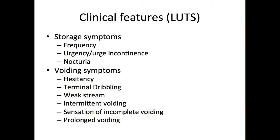There can also be a sense of incomplete voiding and prolonged voiding. The International Prostate Symptom Score, or IPSS, can be used to formally assess the severity of symptoms. However, lower urinary tract symptoms are not unique to BPH and can occur with other conditions, such as urethral stricture, prostate cancer and the use of anticholinergic agents that can inhibit the activity of the detrusor muscle.